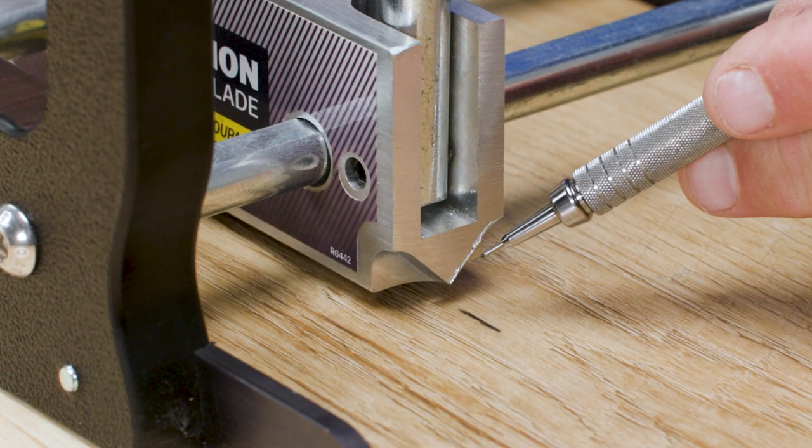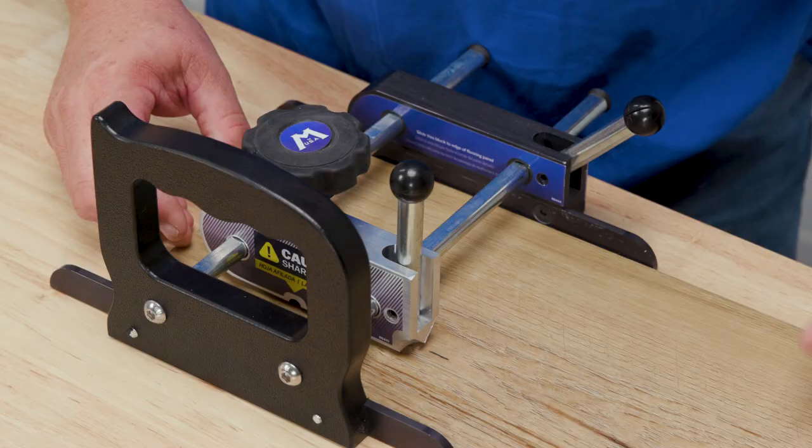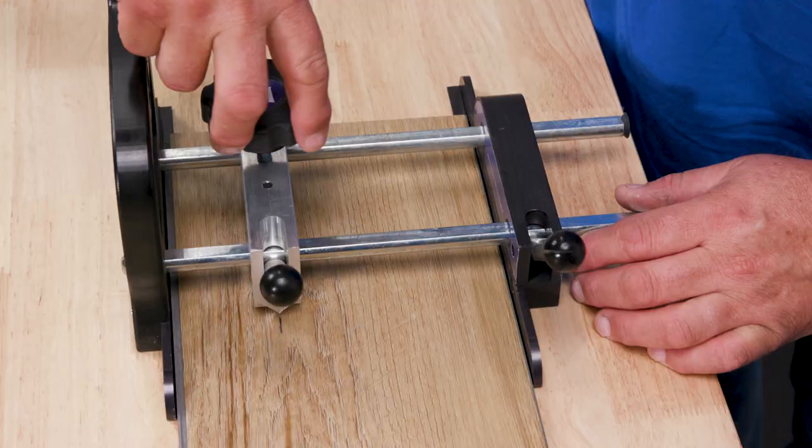Unlock the scoring blade and align it with the cut line on the flooring. The built-in arrow indicator on the front makes alignment easy. Lock the scoring blade in place.